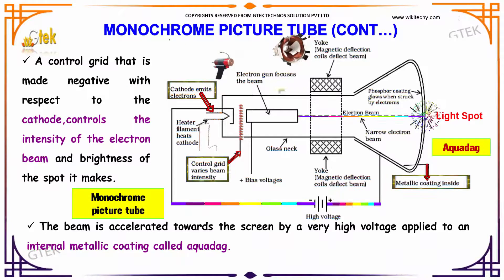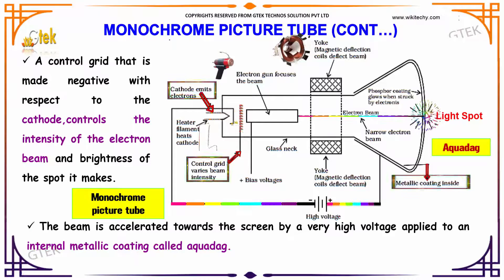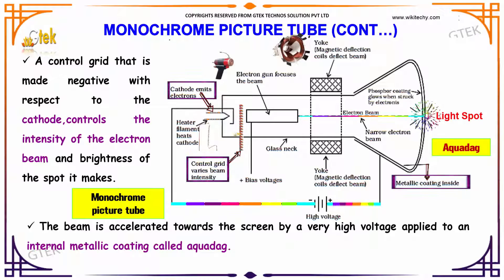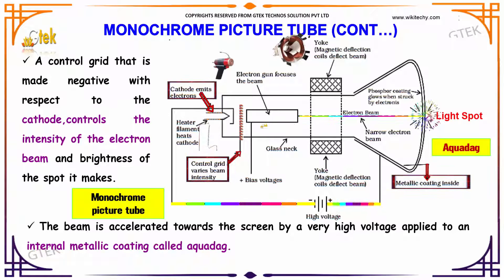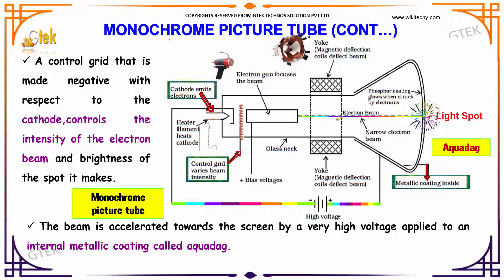There is a control grid. This control grid is made negative with respect to the cathode and controls the intensity of the electron beam and the brightness of the spot it makes. The beam is accelerated towards the screen by a very high voltage applied to an internal metallic coating called aqua-dac.